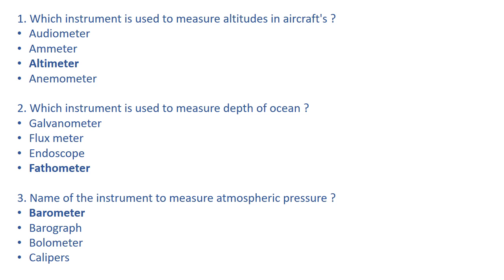Barometer is used to measure atmospheric pressure and barograph is used to record atmospheric pressure. Bolometer is used to measure heat radiation. Caliper is an instrument used to measure the inner and outer diameter of bodies. Let's come to the next question.